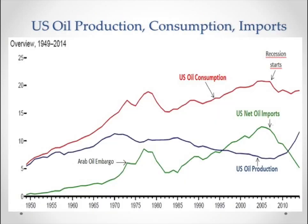This graph has three different lines. U.S. oil production is the black line in the middle; U.S. oil consumption is the red line above; and U.S. oil imports is the third line. Back in 1920, we were producing all the oil we consumed, since no one else was really in the production business. But as we began to use more and more oil, we had to import more and more.